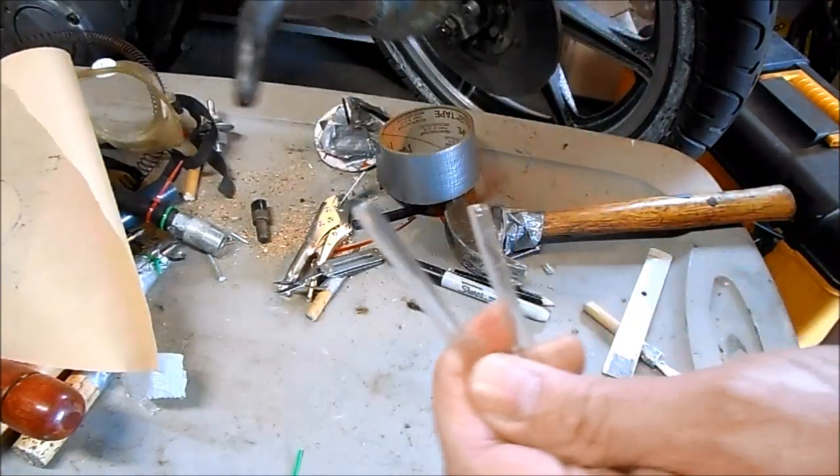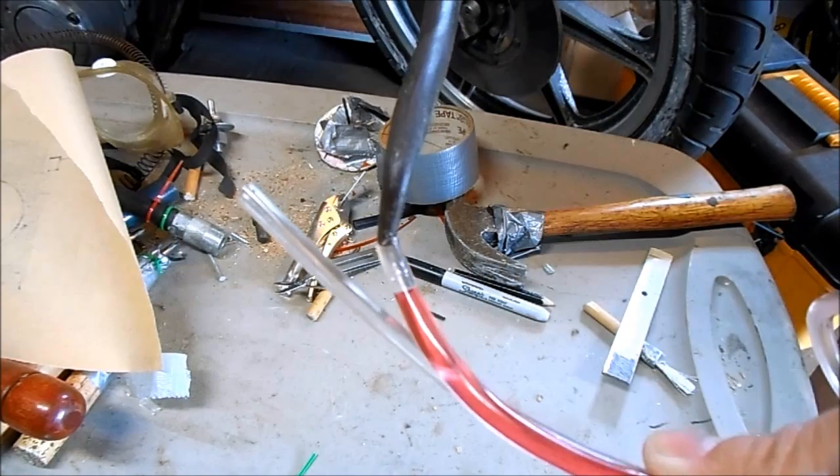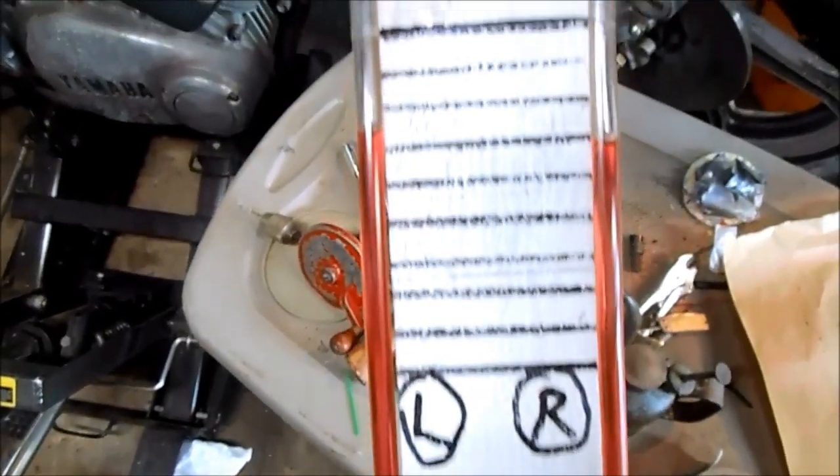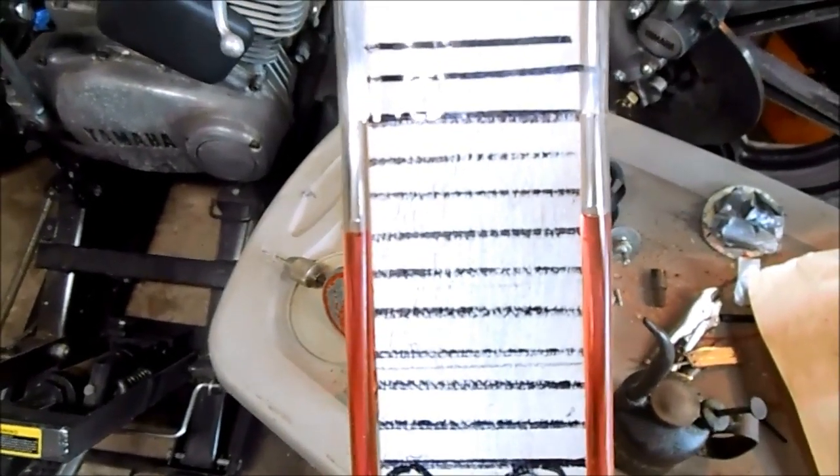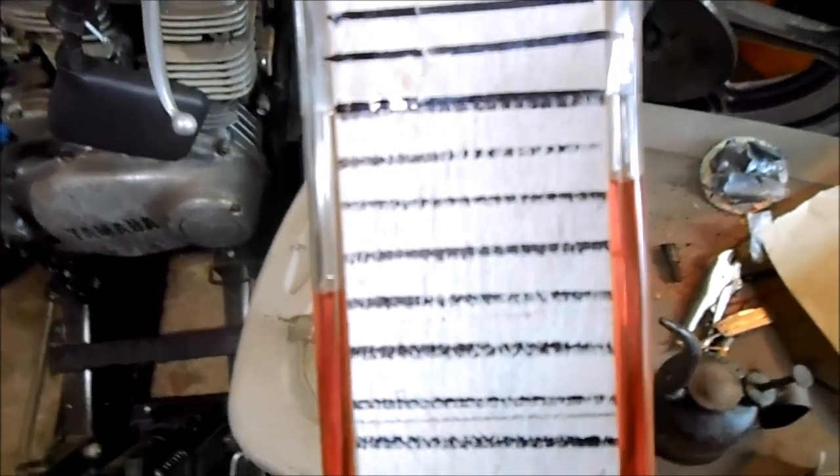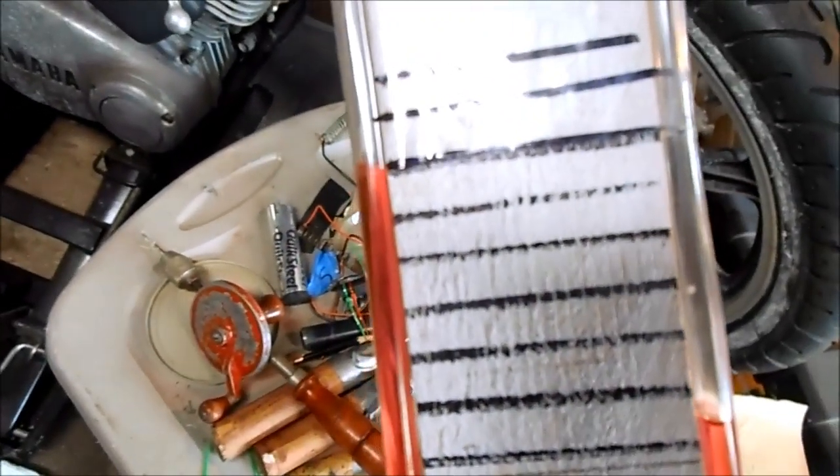Fork oil in my manometer. So the way this works is, if the right side has more vacuum, the level will rise. If the left side has more vacuum, that level will rise.